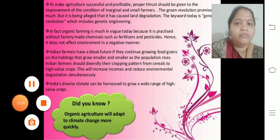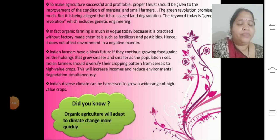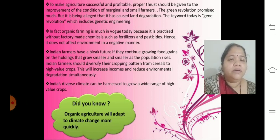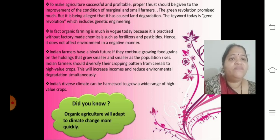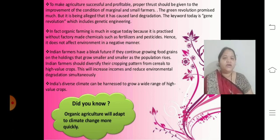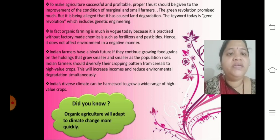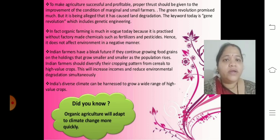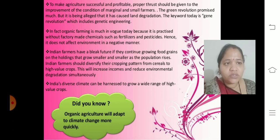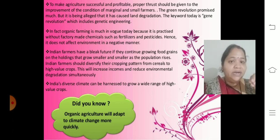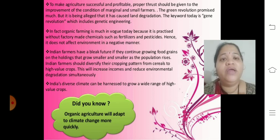The Green Revolution promised much but the use of HYV seeds and chemicals leads to land degradation. We should instead consider the Gene Revolution, which includes genetic engineering, to save our land. Organic farming is much in vogue today because it is practiced without factory-made chemicals such as fertilizers and pesticides, hence it does not negatively affect the environment. Organic farming is a helpful substitute to avoid land degradation.